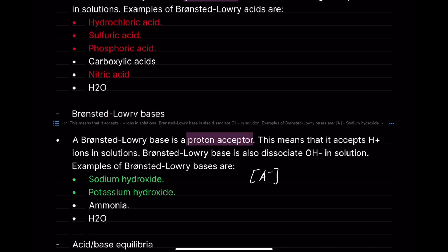Examples of Bronsted-Lowry bases include sodium hydroxide and potassium hydroxide — both very strong bases. The same principle applies for strong bases as for strong acids, but now with hydroxide ions. A strong base completely dissociates OH− in solution, so the equilibrium is far to the right. Sodium hydroxide dissociates into Na+ plus OH−.